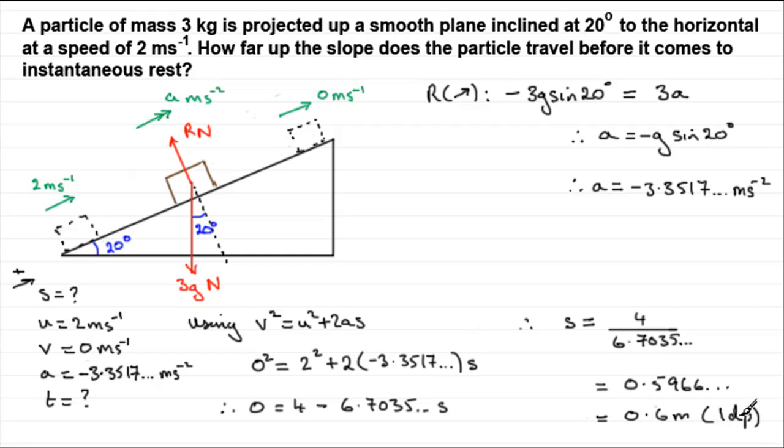The point is, in this question, make sure you do stick to your sign conventions for the directions so that your acceleration comes out negative, showing that it's decelerating. Then pass that negative value directly into your Suvat equation, taking upwards as positive, and the signs should all sort themselves out, and you end up with S being a positive value. I hope that's given you some idea, and that brings us now to the end of this particular tutorial.